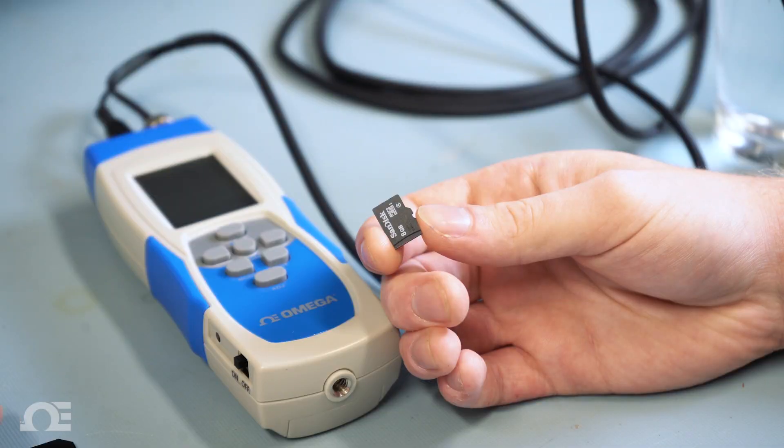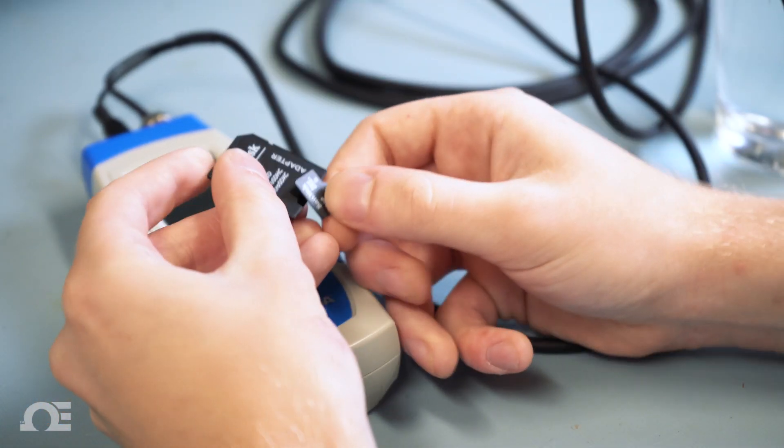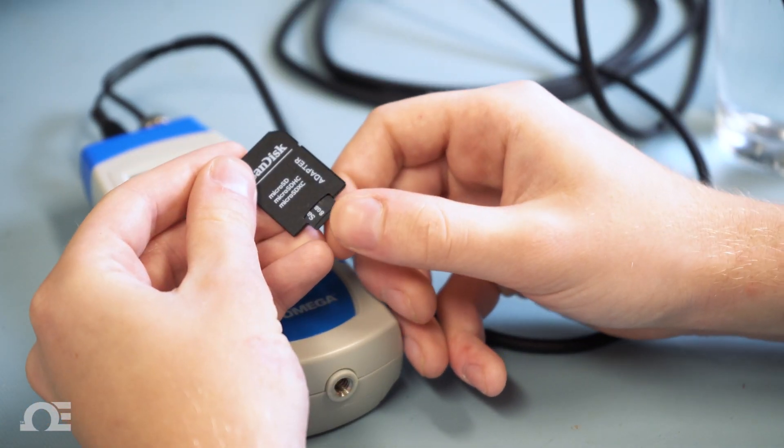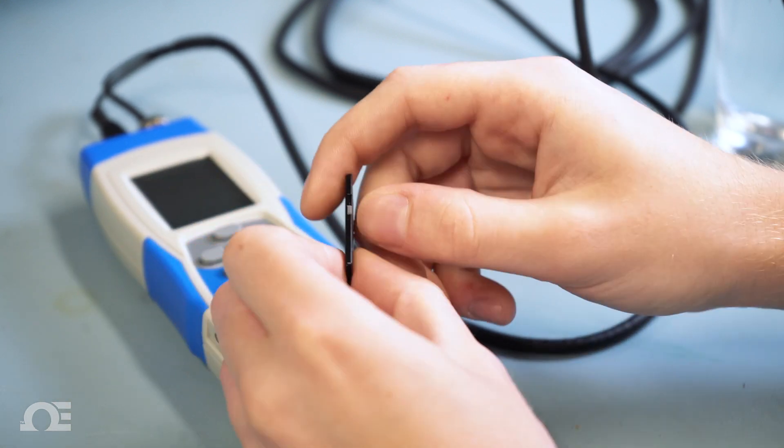First we need to format the included microSD card. To do this, connect your SD card to your PC. For this I'm using a microSD to SD card adapter, so I'm going to need to make sure that the SD card is in the unlocked position.